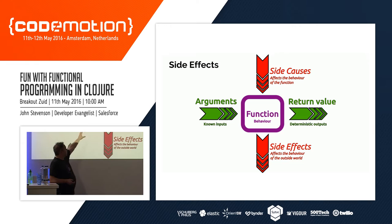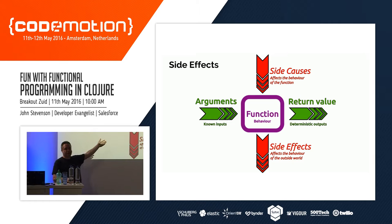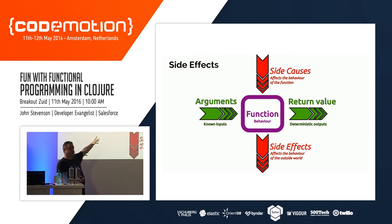I drew this to help visualize what's going on. We've got our function — this could be a function or a method in Java — and it might have arguments. We're giving it parameters when we call it, maybe a string or a number. We can see what the arguments are that we're giving to the function, and we can see what the result is. If that's all we're doing, it makes it a lot easier to reason about the algorithm inside our function.